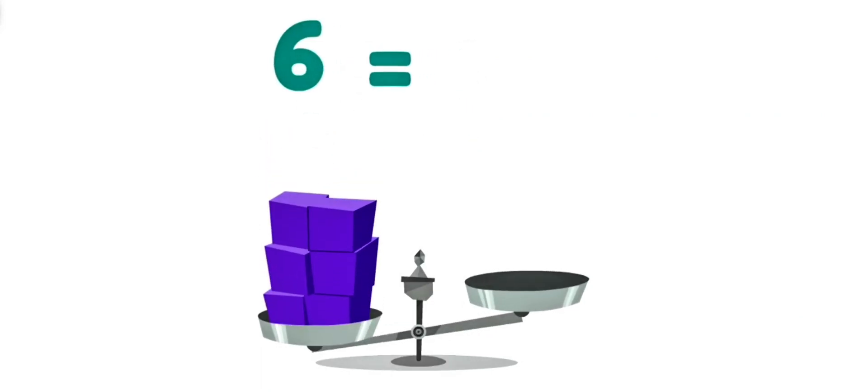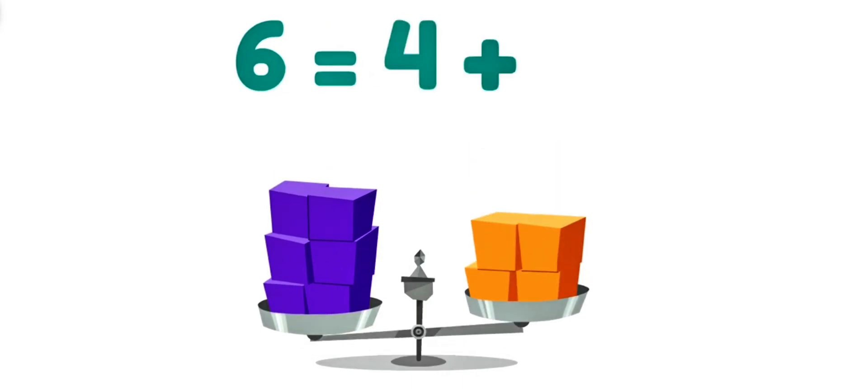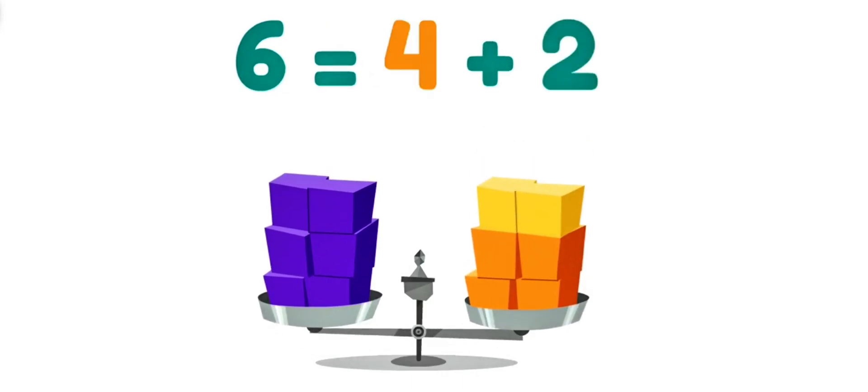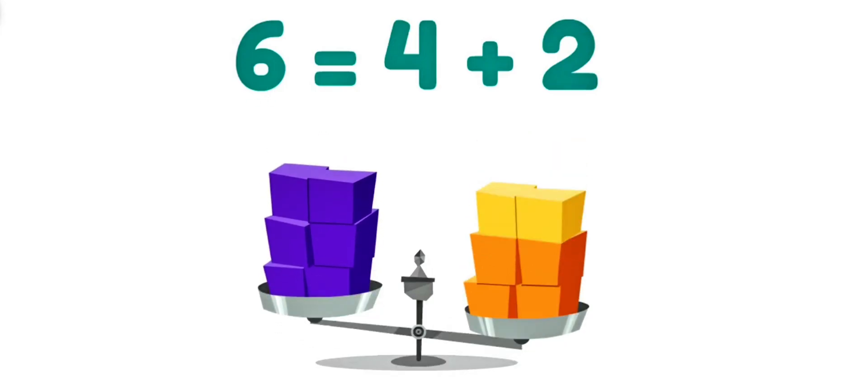The equal sign means that things on both sides of the equation are the same! This side has six! And this side has four plus two! Four plus two? That's six! So this side has six, and this side has six! The equal sign was right! Both sides are the same!